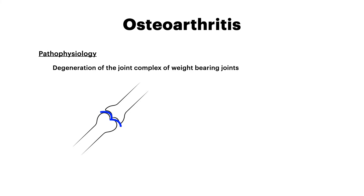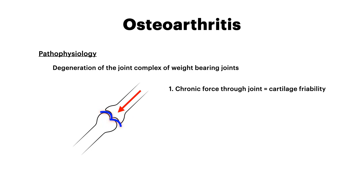Let's make this really simple. Two bones meet and there's obviously a joint between them. In that joint, you have cartilage, illustrated here by those blue squiggly lines. Over time, under certain circumstances, when a patient has certain risk factors, chronic force is exerted through the bone and directed to the joint. After all, the purpose of the joint is to be weight-bearing — it needs to bear the weight of the force.